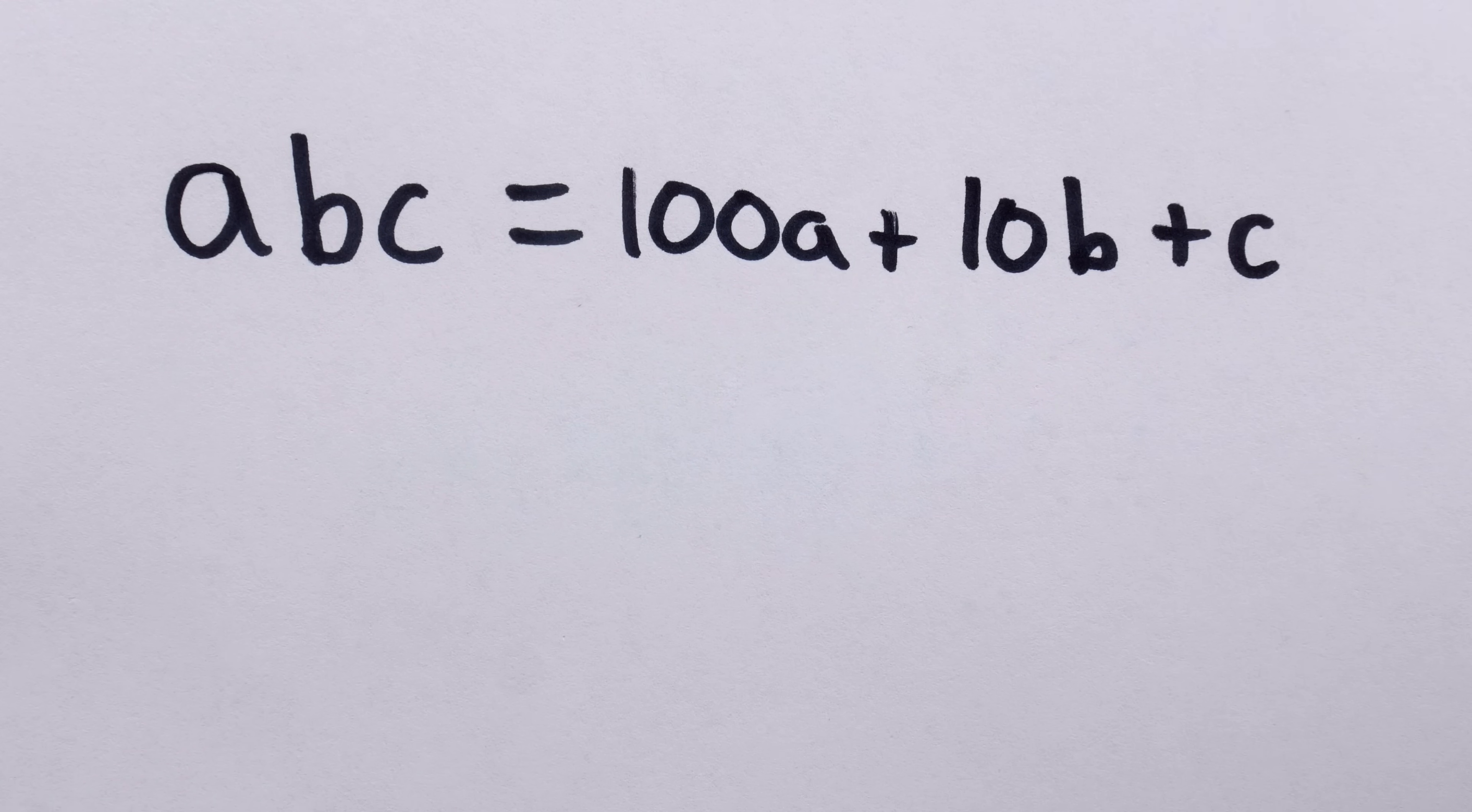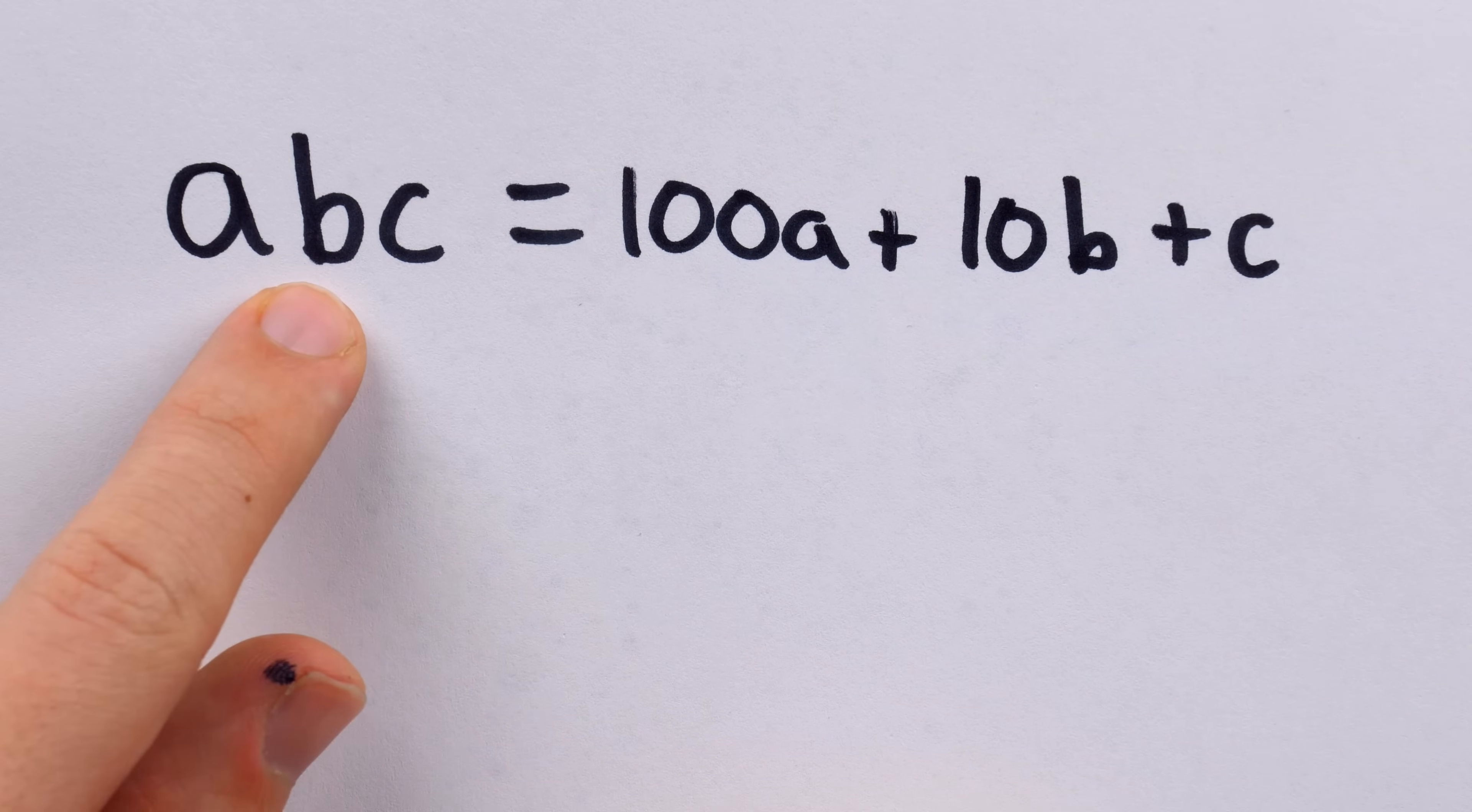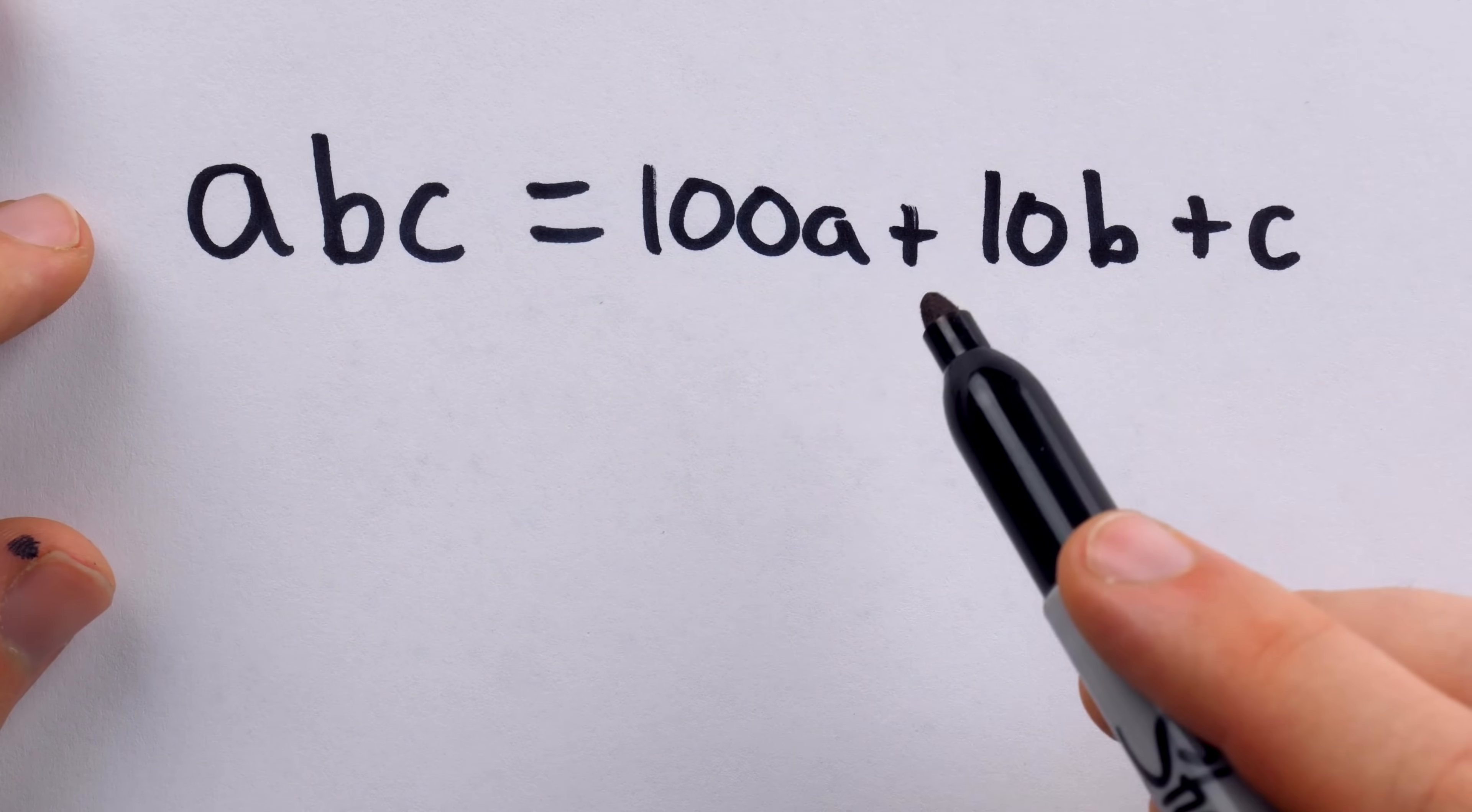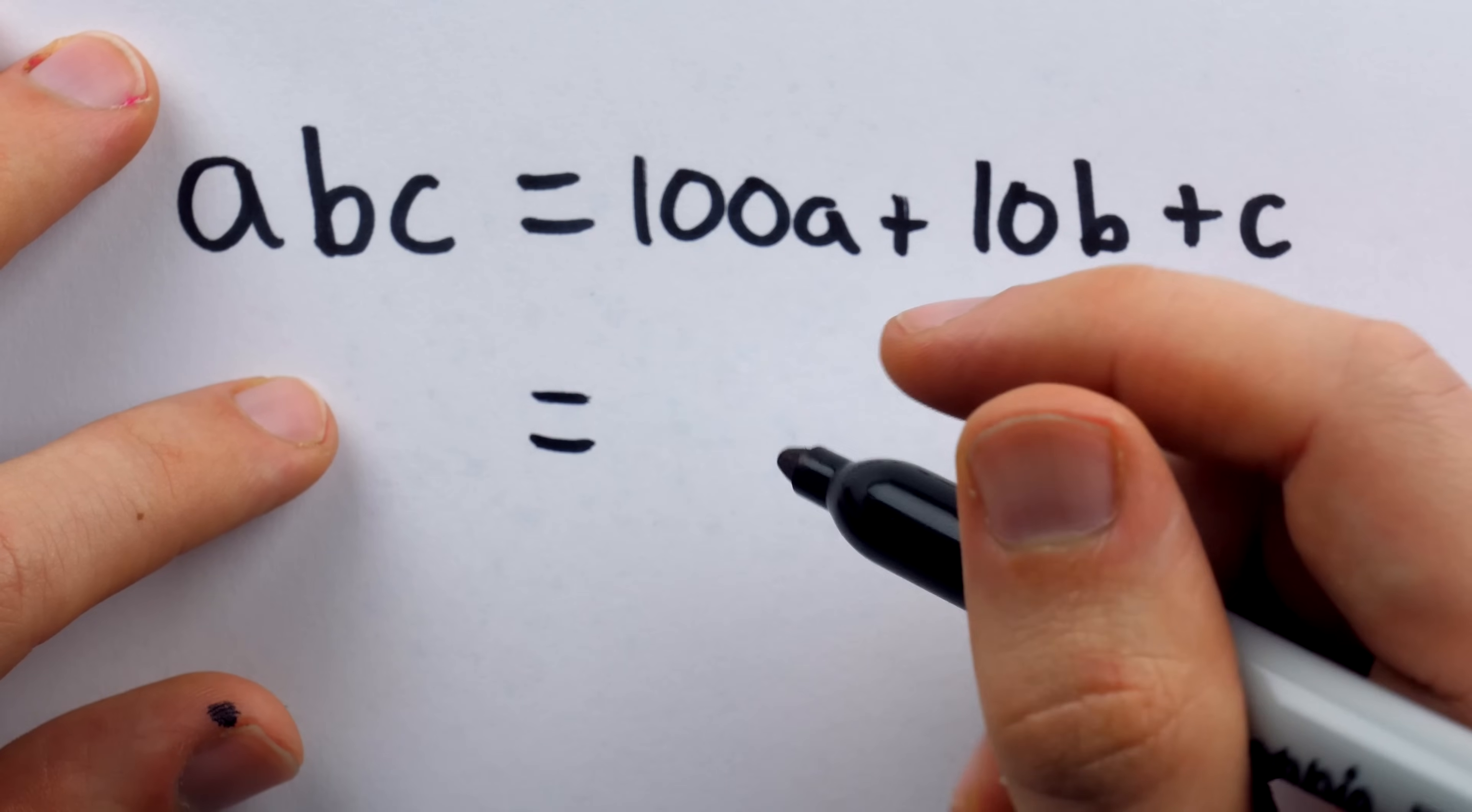Central to the rule is the fact that this number should be divisible by 11 if and only if A minus B plus C is divisible by 11. And if we work with this expression a little bit, we can see that has to be the case. But in order to do that, we need to write some stuff as a multiple of 11 here.